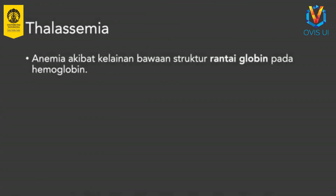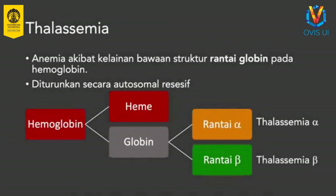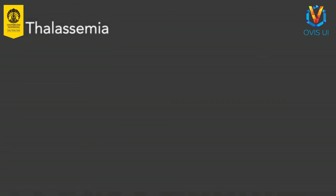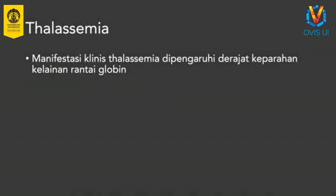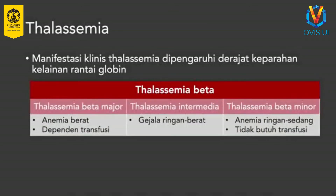Thalassemia adalah penyakit genetik yang menyebabkan defek sintesis rantai globin. Thalassemia diturunkan secara autosomal resesif sehingga dibutuhkan kedua orang tua sebagai pembawa sifat thalassemia untuk menurunkan thalassemia ke anaknya. Thalassemia dapat dibedakan menjadi thalassemia alpha dan beta berdasarkan jenis rantai globin yang mengalami gangguan. Thalassemia menyebabkan anemia yang tingkat keparahannya dipengaruhi jumlah alel rantai globin yang mengalami defek. Pada thalassemia alpha, defek keempat alel rantai alpha menyebabkan tidak terjadinya produksi rantai alpha sama sekali. Bayi dengan kondisi ini umumnya meninggal dalam kandungan.